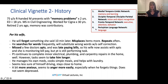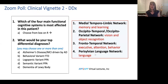Which of the four functional cognitive systems would you put him in? Hopefully you picked medial-temporal-limbic network, because the wife's biggest complaint was that he forgets something said a few minutes later. He has some executive dysfunction with the bills and appointments, but he's still doing those himself. What would be your top differential diagnoses? Alzheimer's disease, MCI driven by Alzheimer's, behavioral variant FTD, one of the PPAs, or dementia with Lewy bodies? Hopefully you picked Alzheimer's disease and MCI.